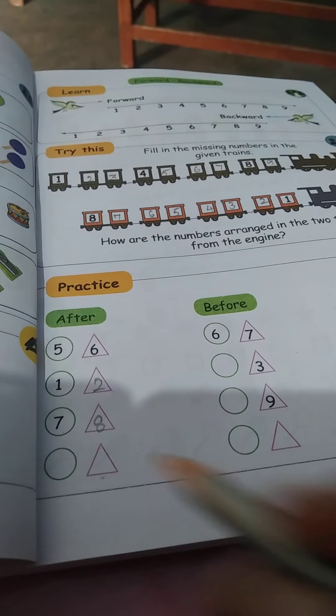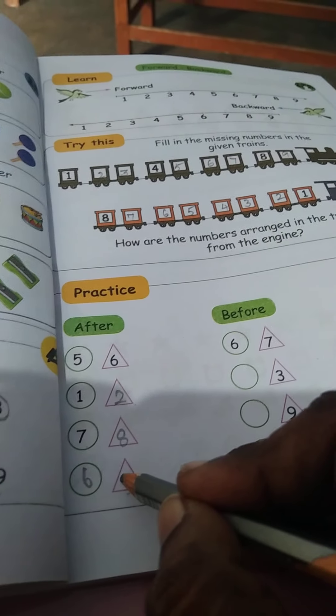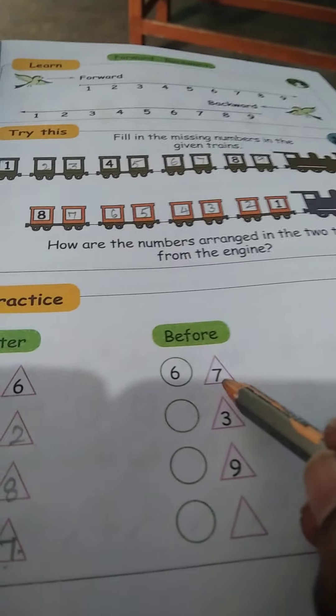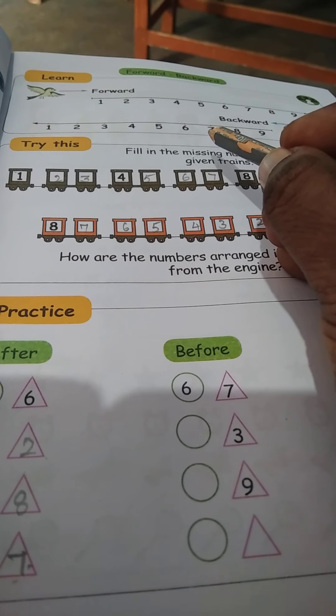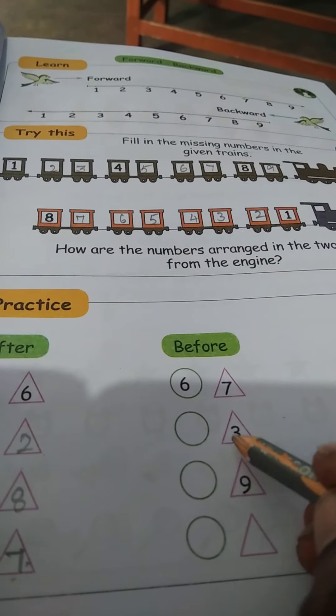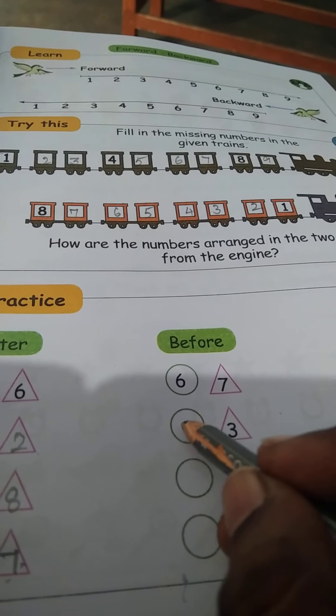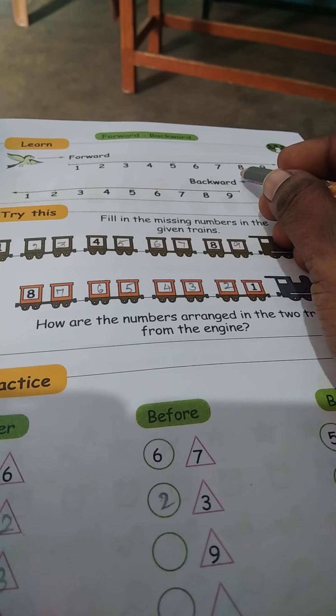6 after 1, after 1, after 2, 7 after 8. What is come before 7? 7 before, what do you say? 6. 3 before, 3 before, what do you say? 2.